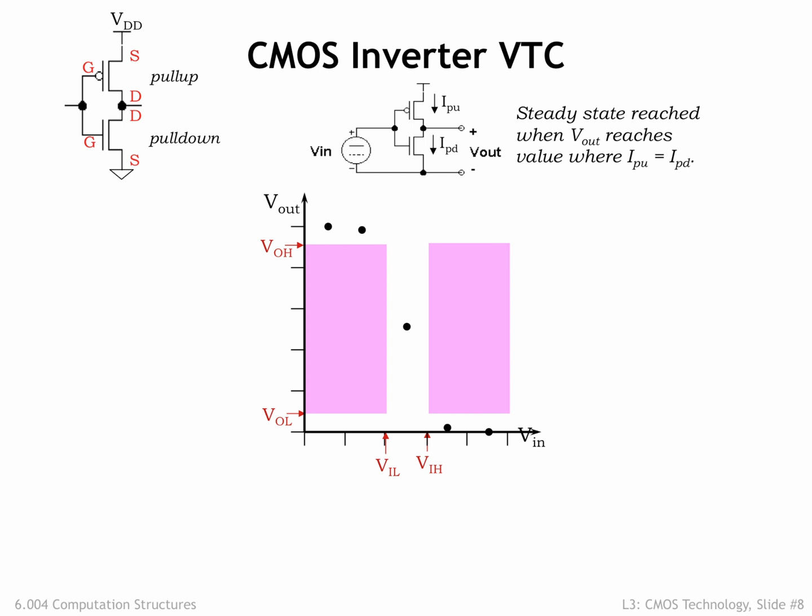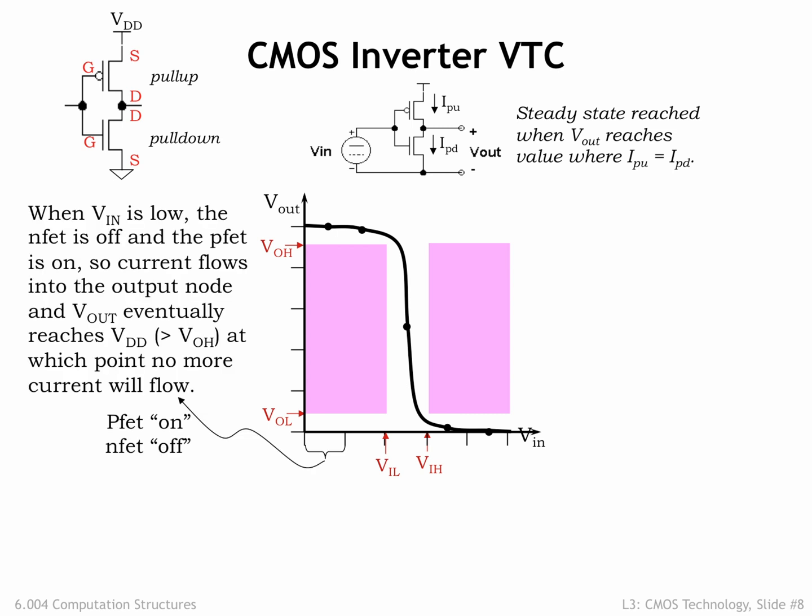The inverter's voltage transfer characteristic is shown in the figure. When VIN is a digital 0 input, we see that VOUT is greater than or equal to VOH, representing a digital 1 output. A 0 input means the NFET switch is off, so there's no connection between the output node and ground, and the PFET switch is on, making a connection between the output node and VDD. Current will flow through the pull-up switch, charging the output node until its voltage reaches VDD. Once both the source and drain terminals are at VDD, there's no voltage difference across the switch, and hence no more current will flow through the switch.